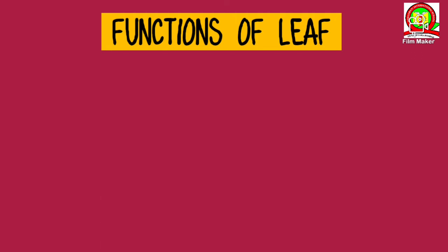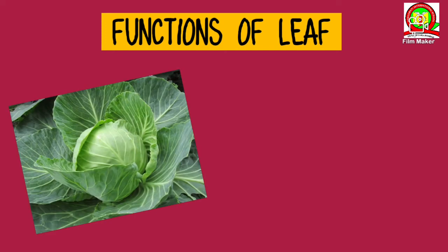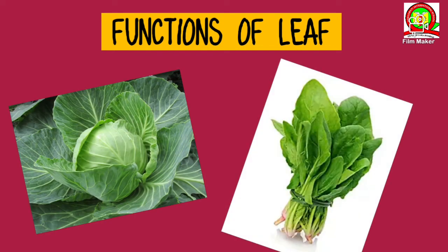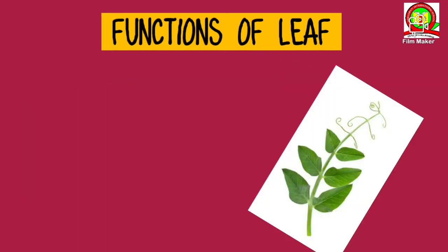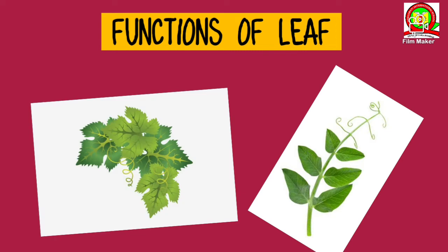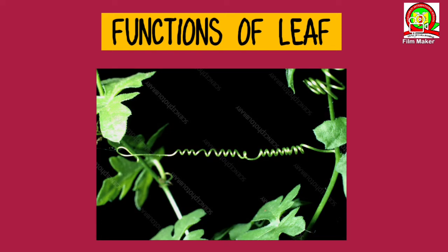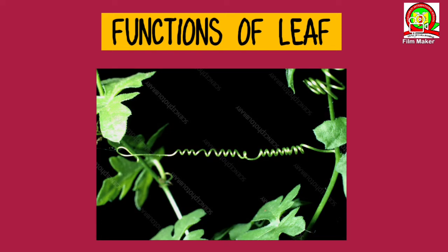Apart from these tasks, in some plants the leaf performs some special tasks. In certain plants such as cabbage, spinach, lettuce, etc., the leaves store food. In some plants like pea, grape, etc., the leaf turns into thread-like tendrils. Plants coil these tendrils, which are modified leaves, around a support to climb on it.